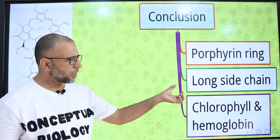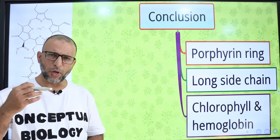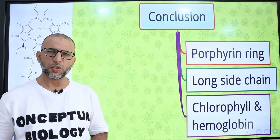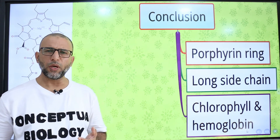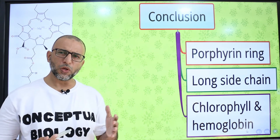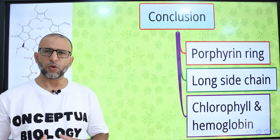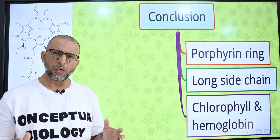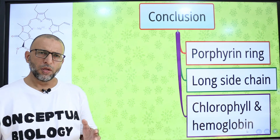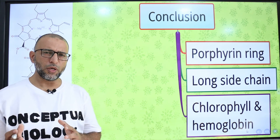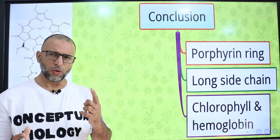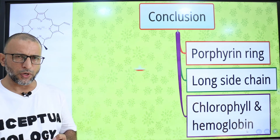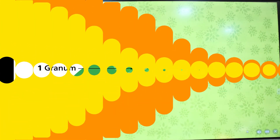The phytol tail is a long side chain that anchors the chlorophyll molecule to the thylakoid membrane. There are five kinds of chlorophyll molecules including chlorophyll A, B, C, D, E, bacteriochlorophyll, carotenoids, and phycobilins. Chlorophyll A is the primary photosynthetic pigment and the rest are accessory pigments. The difference between chlorophyll A and chlorophyll B is only in one functional group: chlorophyll A has a methyl group and chlorophyll B has a carbonyl group.